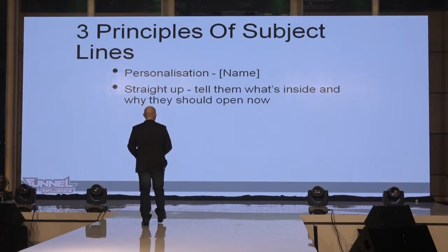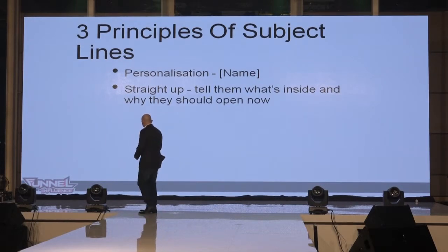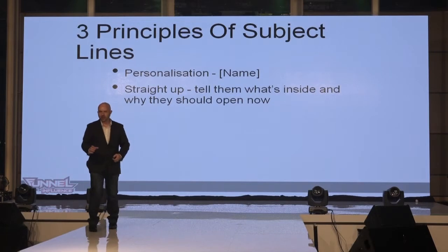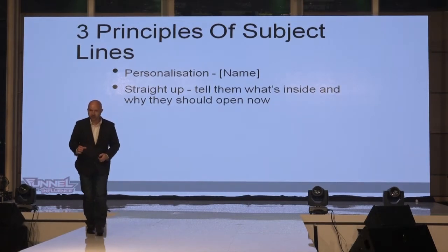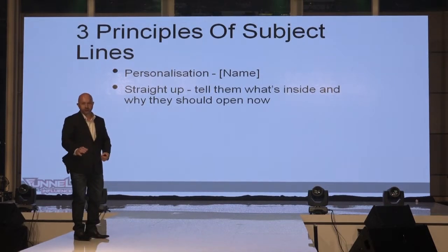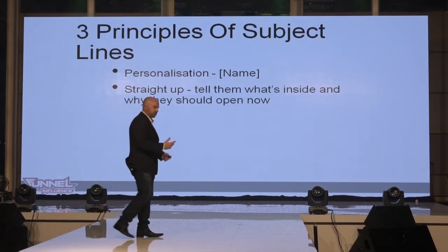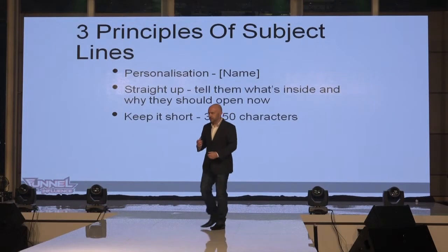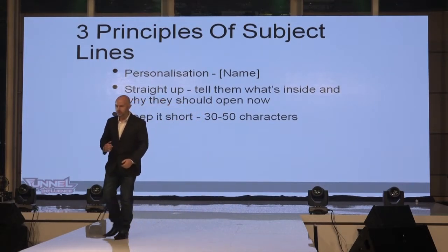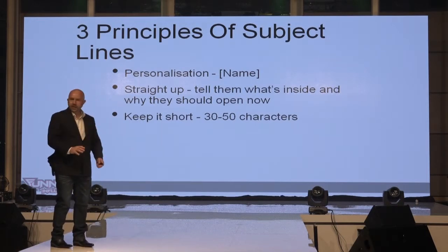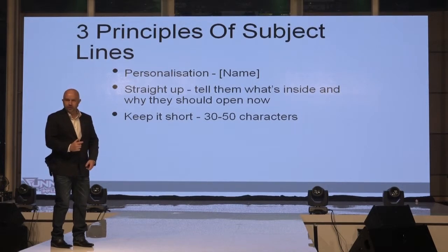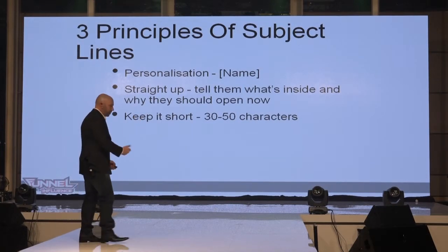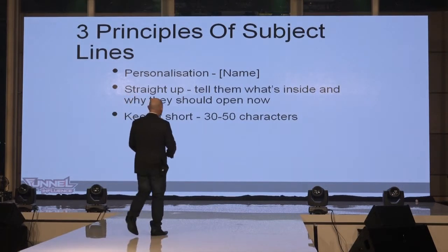Don't beat around the bush. Tell them straight up what's inside and why they should open it now. You could say, 'Brian, here's the PDF that you asked for,' or details about an upcoming event. Don't be afraid to just tell them straight out what it is. Don't worry too much about weird tricks — just tell them what it is and why they should open it now. 30 to 50 characters is probably the absolute most you want for subject lines, so you get a good read on a mobile device.